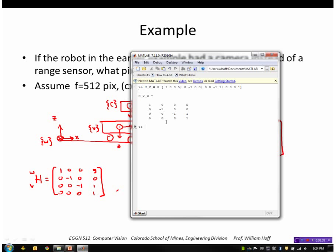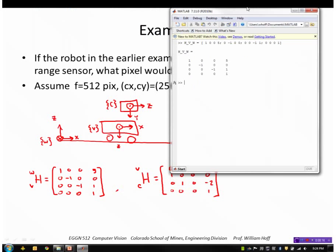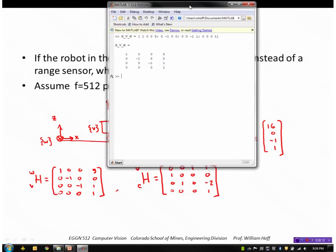Okay, then we had the camera to vehicle, which was 0, 0, 1, 1, 1, 0, 0, 0, 0, 1, 0, minus 2, 0, 0, 0, 1.